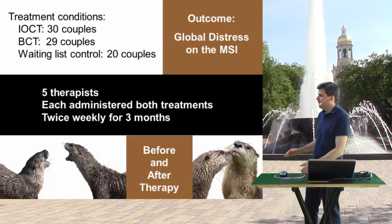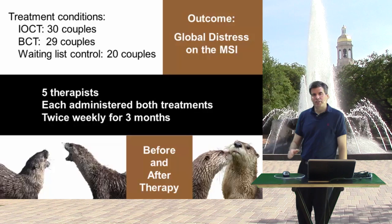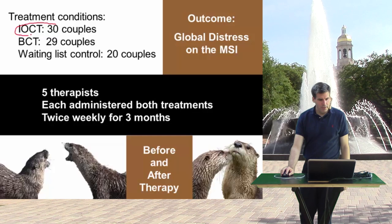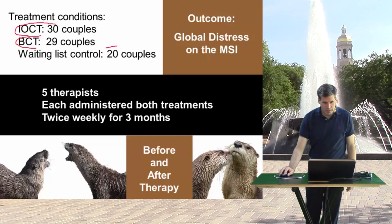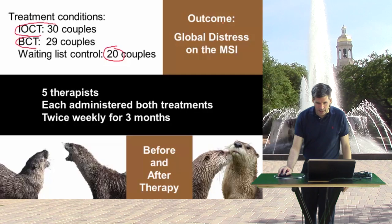If you recall, we have a study of participants that are all couples seeking couple therapy — relationship therapy for relationship distress — and they were randomly assigned into three different conditions. 30 couples received insight-oriented couple therapy, 29 couples received behavioral couple therapy, and 20 couples went into a wait-list control condition where they did not receive any therapy over the course of the study, and then when it was all over, they were offered therapy if they wanted it at the end.